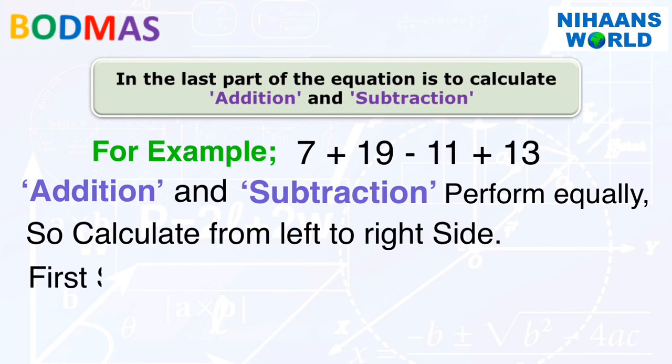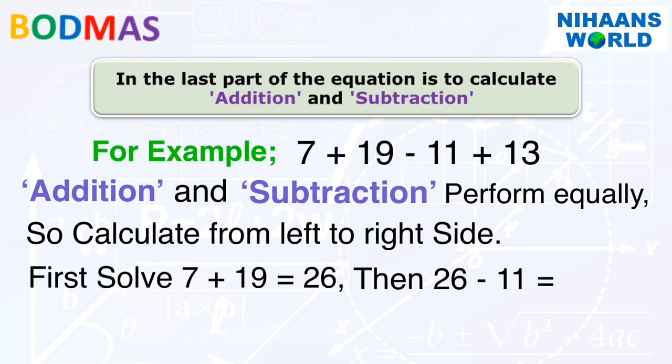First, solve 7 plus 19 is equal to 26. Then, 26 minus 11 is equal to 15. And then, 15 plus 13 is equal to 28.